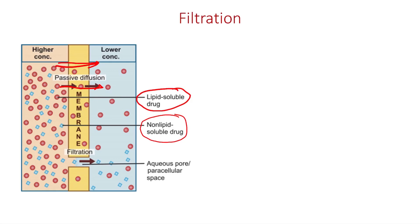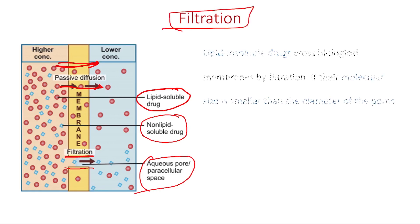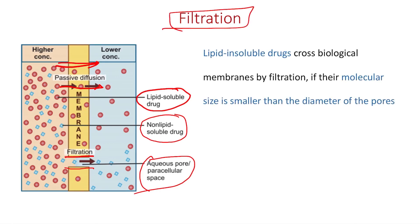For blue molecules it is very difficult to pass through membranes, so they pass through pores or channels known as aquapores or paracellular spaces. In these spaces, only smaller molecules get passed — larger molecules do not. So lipid-insoluble drugs cross the membrane by filtration only if their size is smaller than the diameter of the pores.